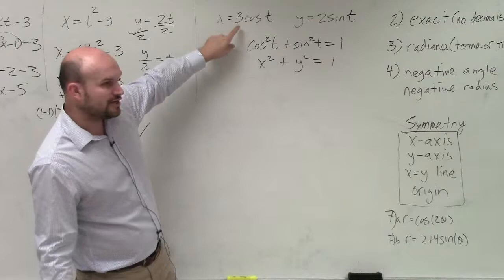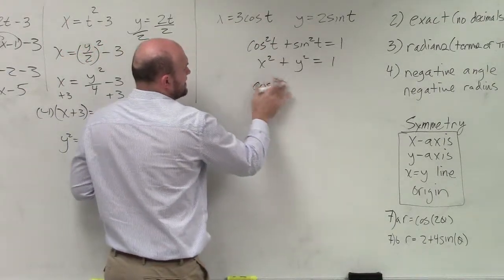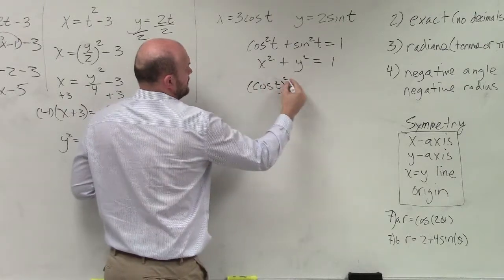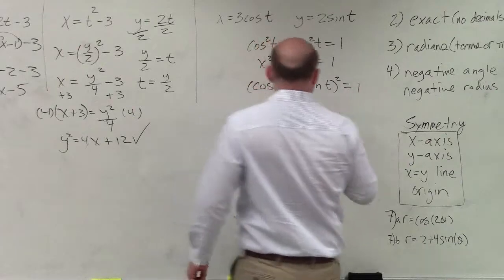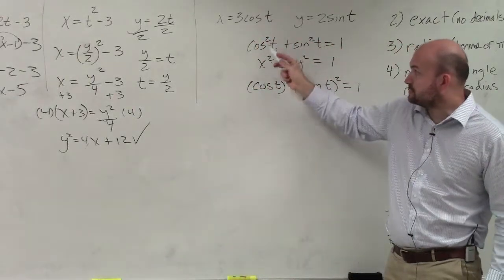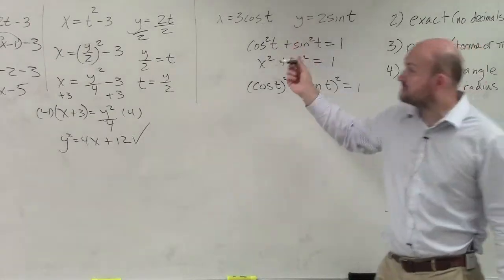Now, I'm going to write it like this, because I want you guys to understand that cosine squared of t is the same thing as cosine of t squared. So I just need to solve for cosine of t.